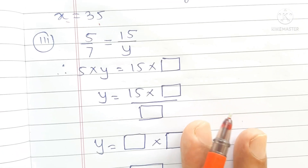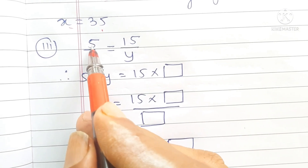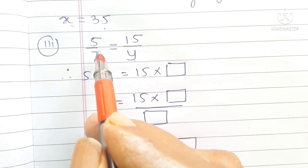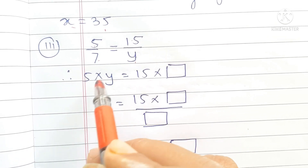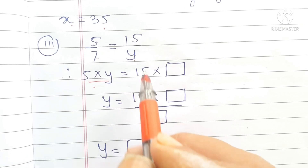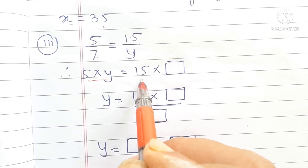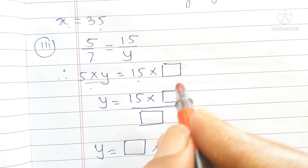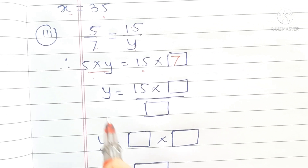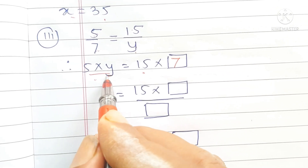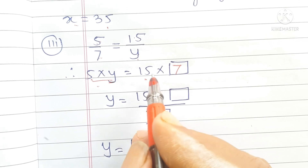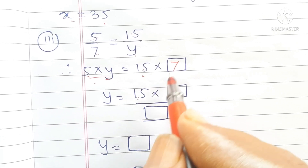5 upon 7 is equal to 15 upon y. Cross multiplication: 5 into y equals 15 into 7. Dividing both sides, we get y is equal to 15 into 7 divided by 5.